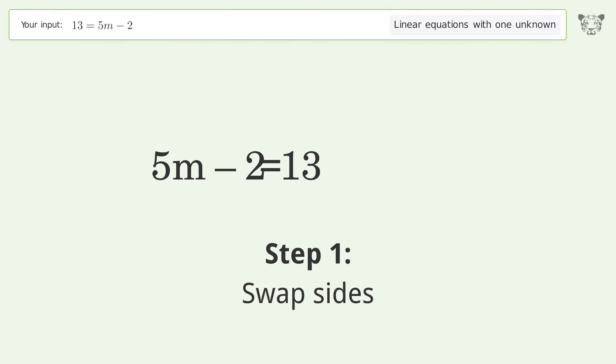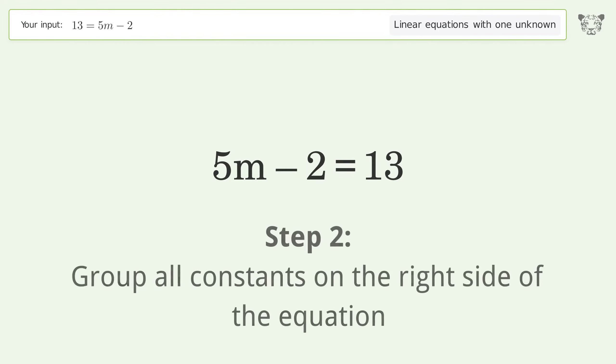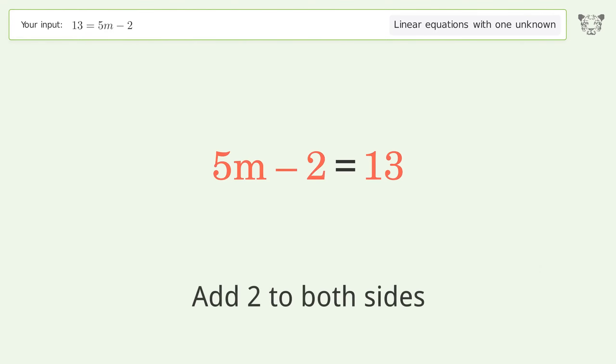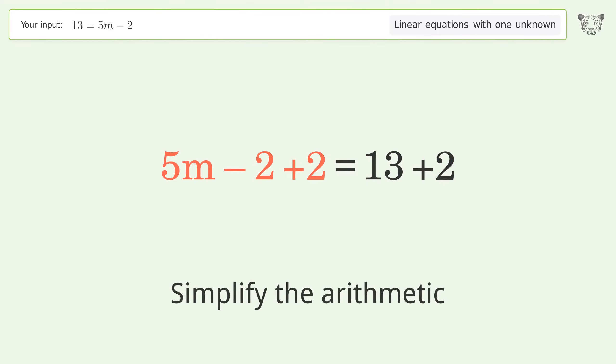Swap sides. Group all constants on the right side of the equation. Add 2 to both sides. Simplify the arithmetic.